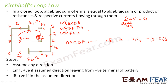We also have the internal resistance r1. The current flowing through r1 is I1, also in the direction opposite to the assumed direction, so this term is −I1·r1. Therefore, the full equation for loop A-B-C-D-A is: −E1 = −I1·R1 − (I1 + I2)·R2 − I1·r1.